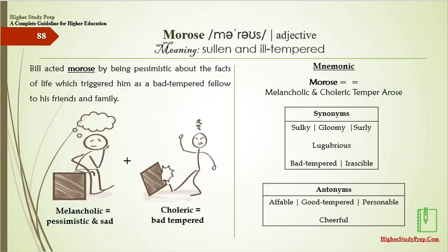Morose means sullen and ill-tempered. Bill acted morose by being pessimistic about the facts of life, which triggered him as a bad-tempered fellow to his friends and family. Mnemonic: morose — melancholic and choleric temper arose. The synonyms of morose are sulky, gloomy, surly, lugubrious, irascible, or bad-tempered. The antonyms are good-tempered, affable, personable, or cheerful.